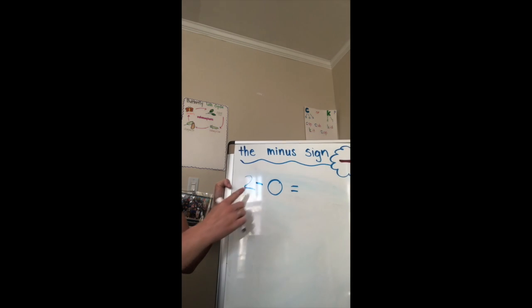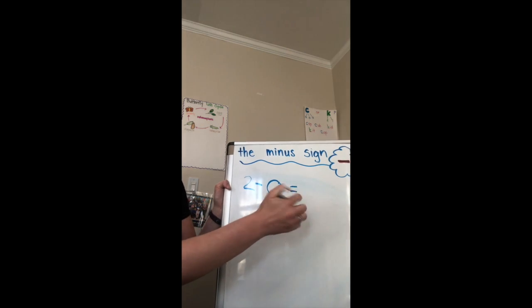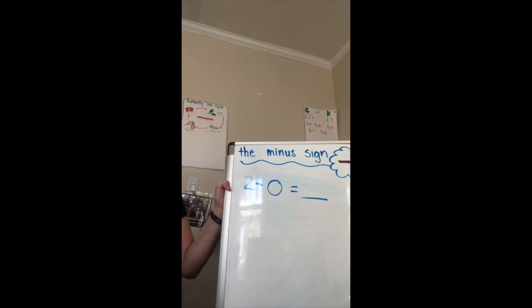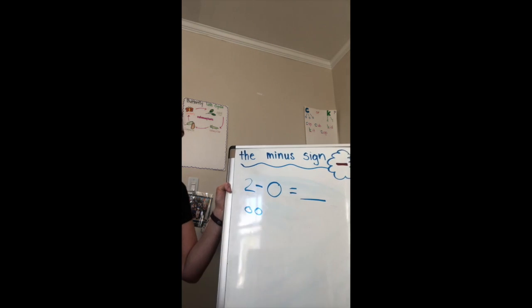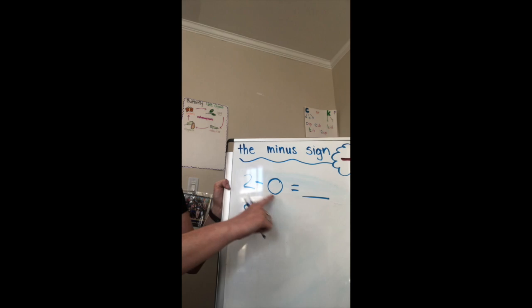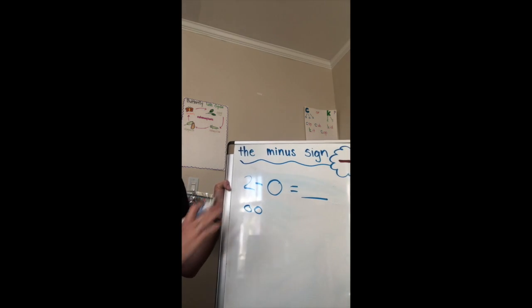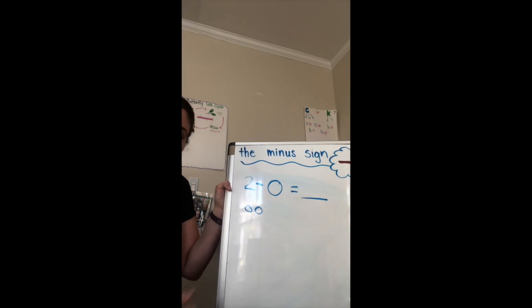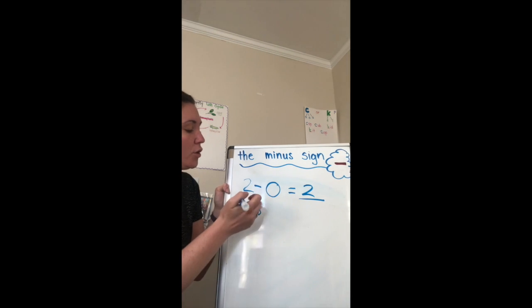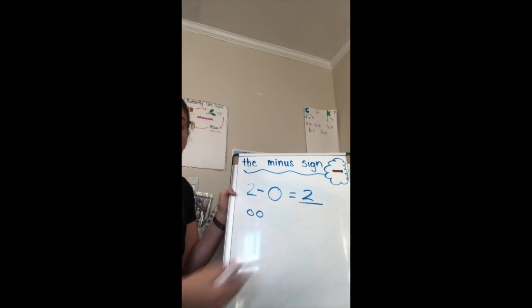It's a small little line. So two minus zero equals blank. So I'm going to draw two circles for our hens. Did any hens leave? No, we're taking away zero. So we're not taking any away. How many are left over? Two. Very good. So two minus zero equals two.